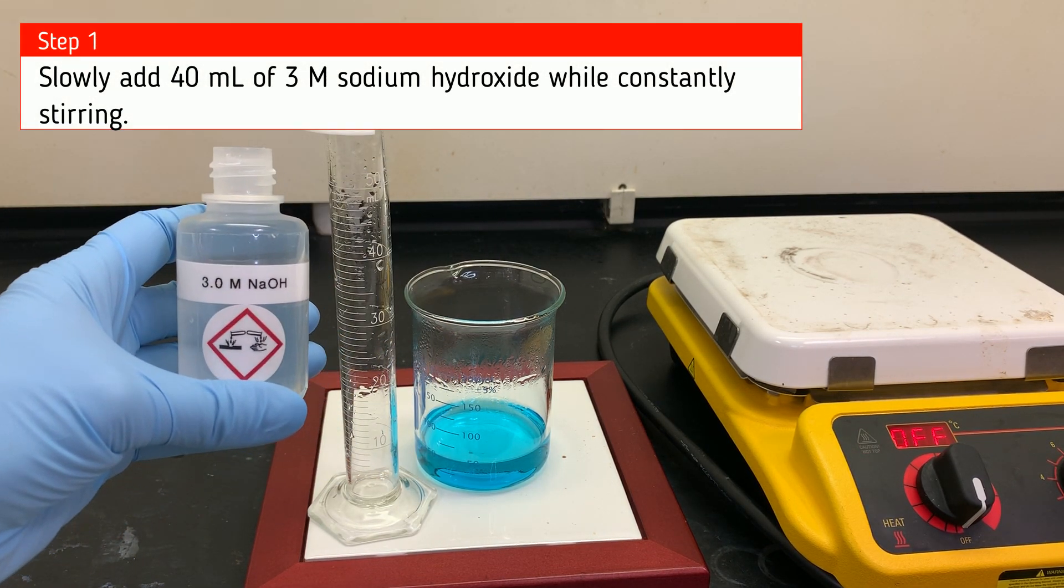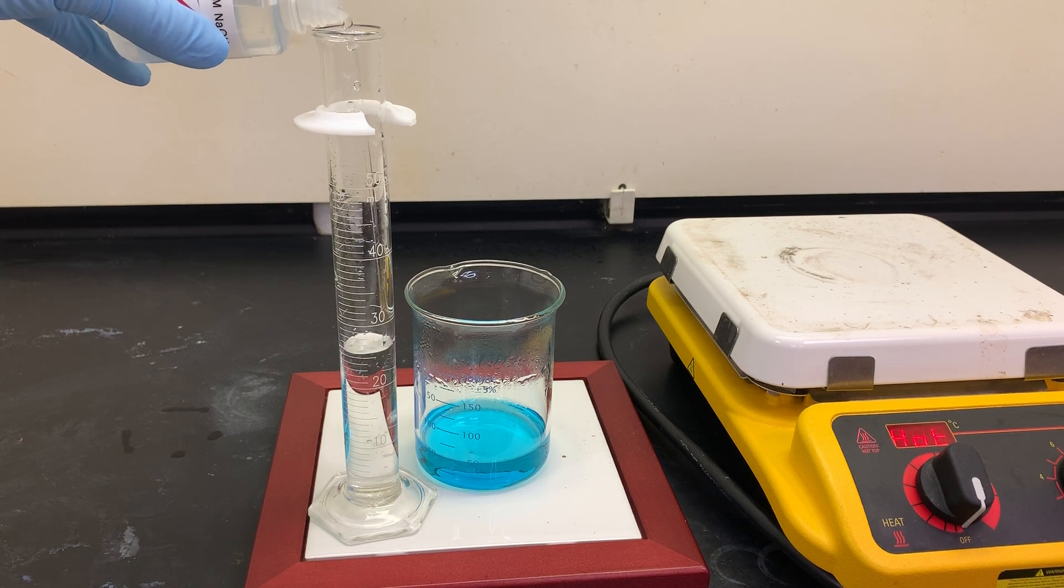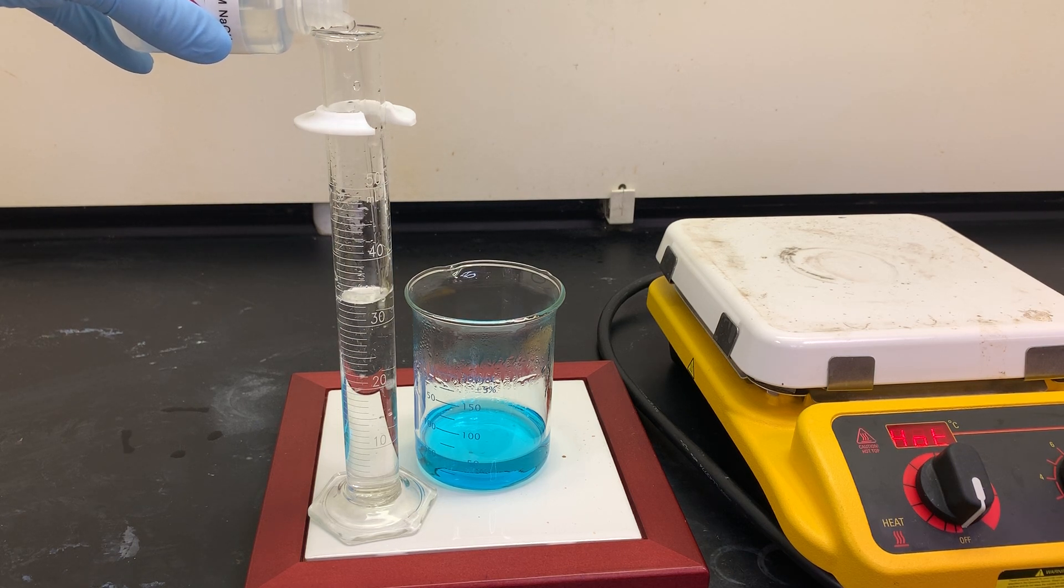We'll start off by taking 40 milliliters of a three molar sodium hydroxide solution and add it to our mixture. We're going to be doing this while we stir constantly to get everything as reacted as possible.